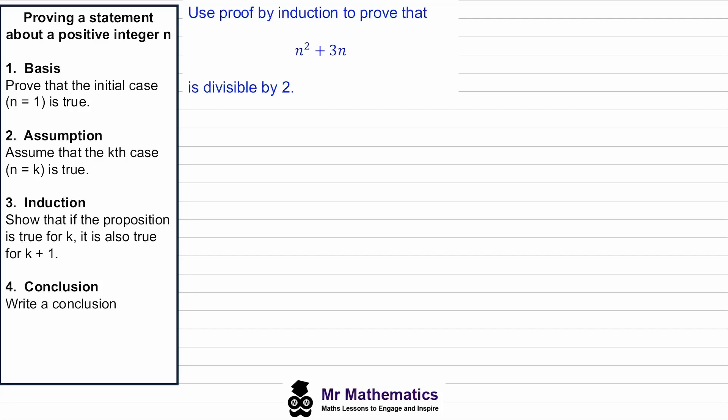In this video we're going to look at proving by induction whether a function is divisible by a given constant. We'll break the proof down into four steps. We'll look at the basis — this is where we prove that the initial case is true when n equals one. We'll look at the assumption, where we assume that the kth case is true. Then the induction, where if the proposition is true for k it is also true for k plus one. And then the conclusion, which involves a written statement to summarize our findings.